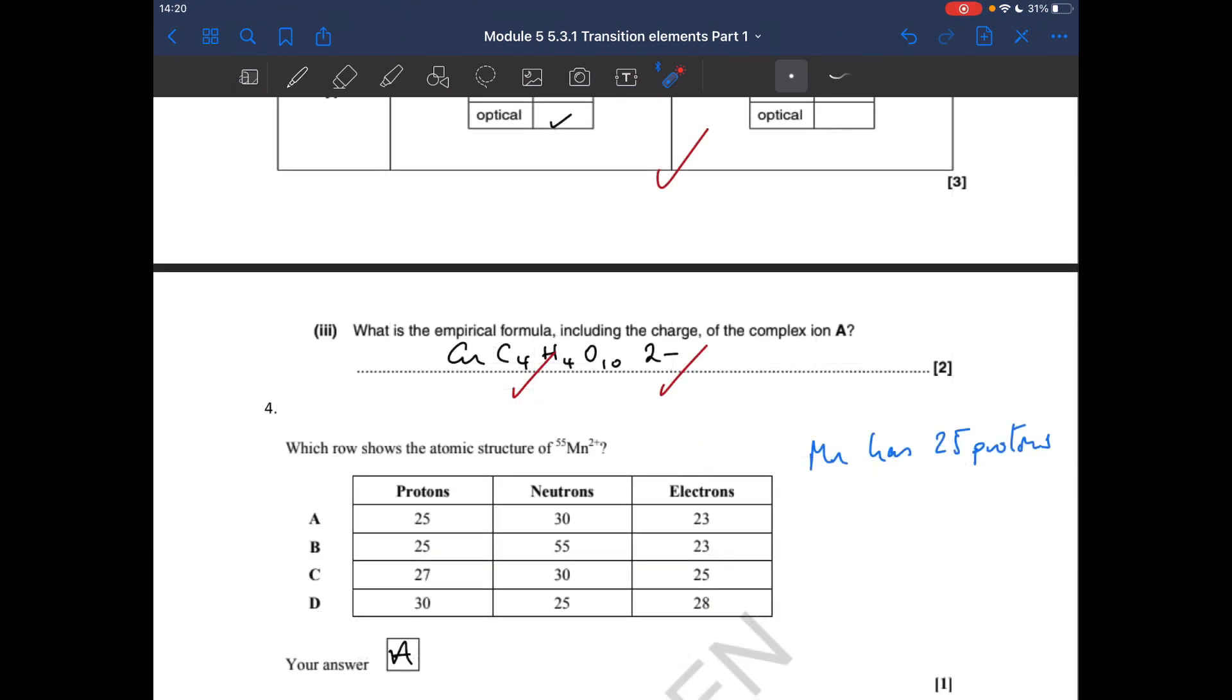And 4 now, which row shows the atomic structure of the Mn-55 2 plus ion? We can see there, Mn is 25 protons, get that from the datasheet periodic table. So that leaves us with options A and B. The neutrons are going to be 55 minus 25, so 30, so it's A.